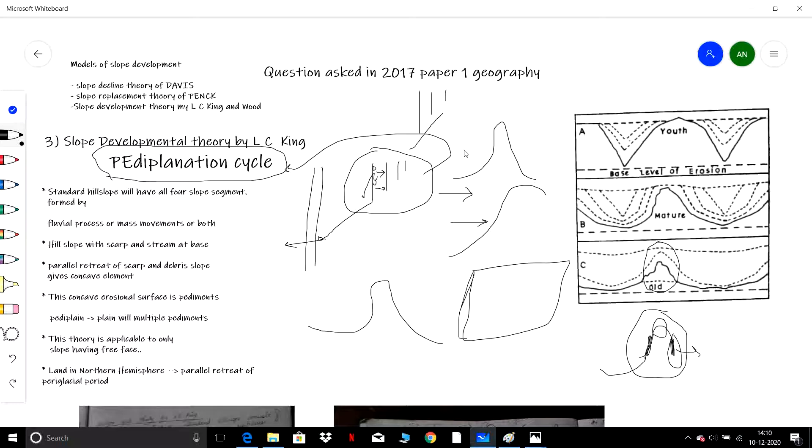of the previous periods are convex-concave slopes, which are formed due to parallel retreat but not of present day processes but of periglacial period processes.